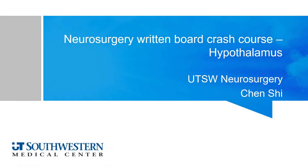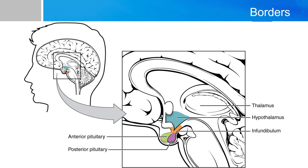Hello and welcome to Neurosurgery Board Crash Course. My name is Chen, and we will be talking about the hypothalamus today. The hypothalamus, as the name suggests, is directly underneath the thalamus, and it's directly above the pituitary.